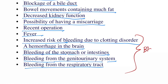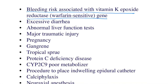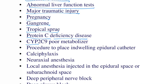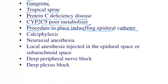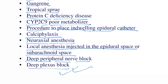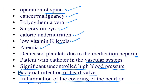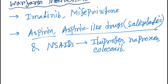Further contraindications include: balloon-like swelling of an artery of the brain, bulge and tear of the outer blood vessel wall, cholesterol embolism, stomach or intestinal ulcer, severe liver disease, blockage of a bile duct, bowel movements containing much fat, decreased kidney function, possibility of miscarriage, recent operation, fever, increased risk of bleeding due to clotting disorder, hemorrhage in the brain, bleeding from the stomach, intestines, genitourinary system, or respiratory tract, excessive diarrhea, abnormal liver function, major traumatic injury, gangrene, and CYP2C9 poor metabolizers.